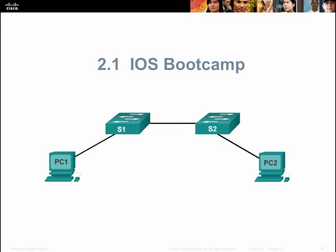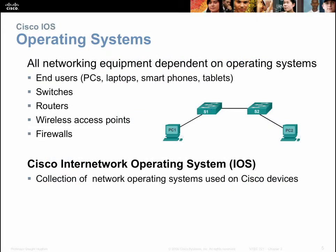So what is IOS? IOS stands for Internet Network Operating System. Many devices — all computerized devices, from your cell phone to your iWatch, to a computer, to even your car — have an operating system. An operating system is specialized software that enables the hardware to do what you want to do.